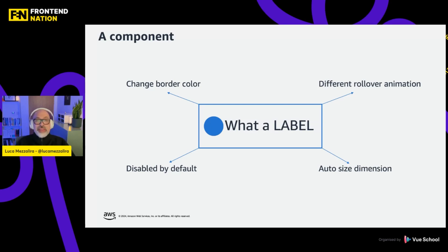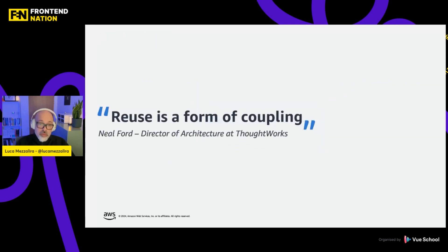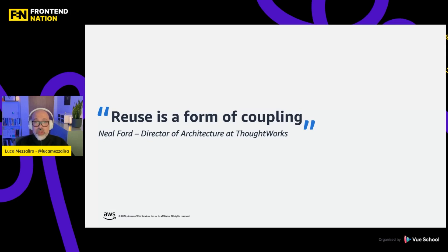The problem with buttons, or components in general, is that what you're optimizing for is creating an abstraction over a bunch of features to allow the component to be used in different contexts. The problem is that reusability is a form of coupling — and don't take my word for it, take Neil Ford, Director of Architecture at ThoughtWorks, when he says that. Unfortunately, very often when we think about micro frontends, we are optimizing for different dimensions. That's why micro frontends cannot be compared with components. It's very likely that inside a micro frontend you have multiple components, but they are not the same thing.